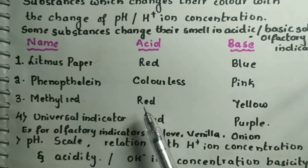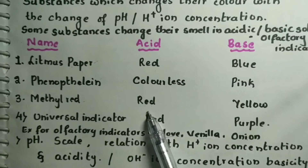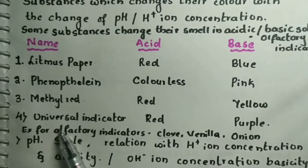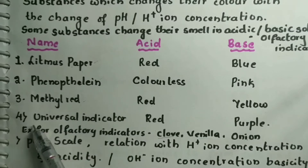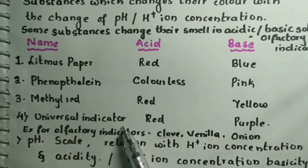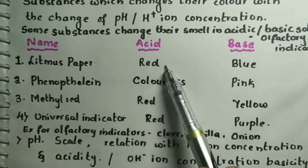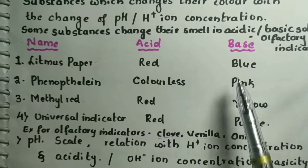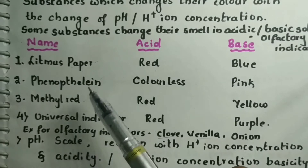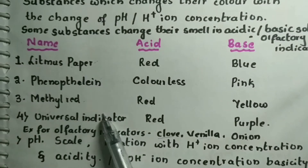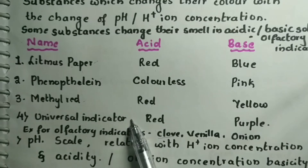Methyl red is red in acidic solutions and changes to yellow in basic solution. Universal indicator is made up of a mixture of many indicators. It becomes red in acidic solution and purple in basic solution. Note: focus on the first three indicators — universal indicator is not in your syllabus.